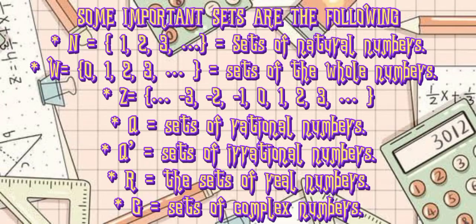Some important sets are the following: N - set of natural numbers, W - set of whole numbers, Z - integers, Q - set of rational numbers, Q' - set of irrational numbers, R - the set of real numbers, and lastly, C - set of complex numbers.